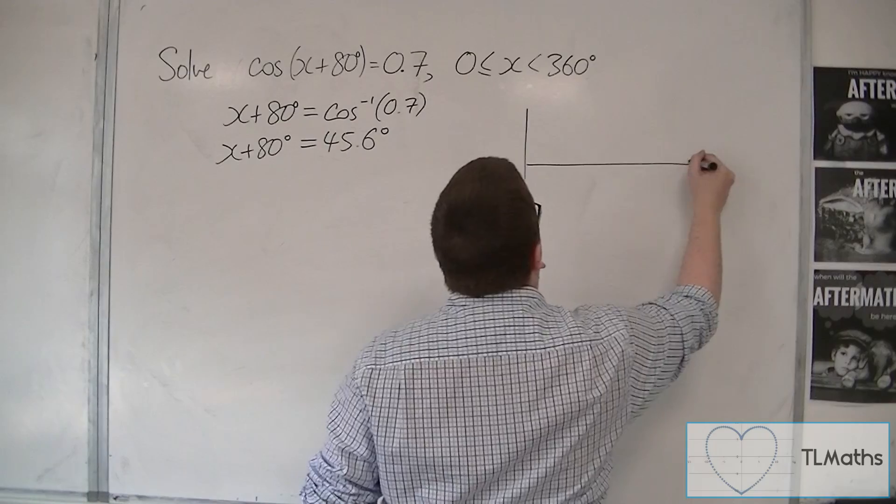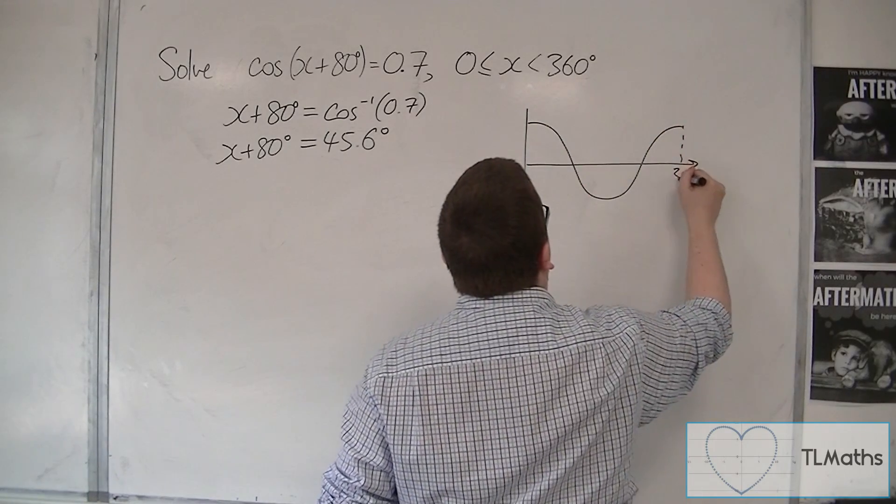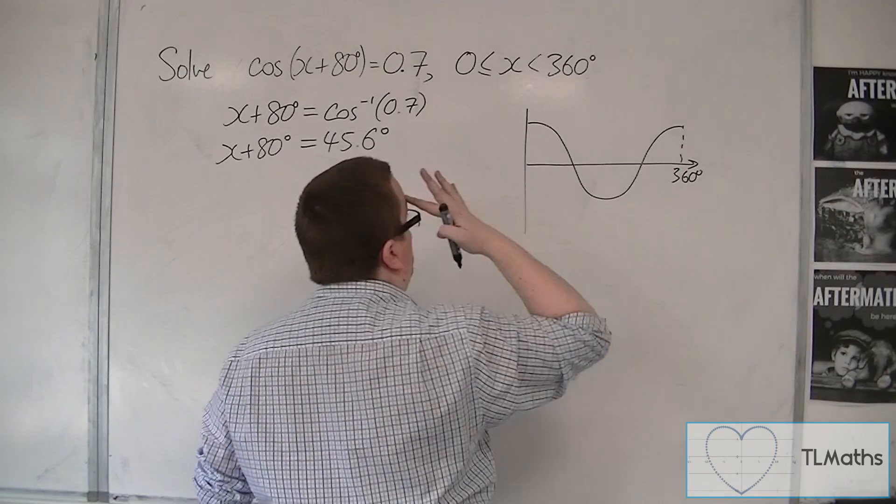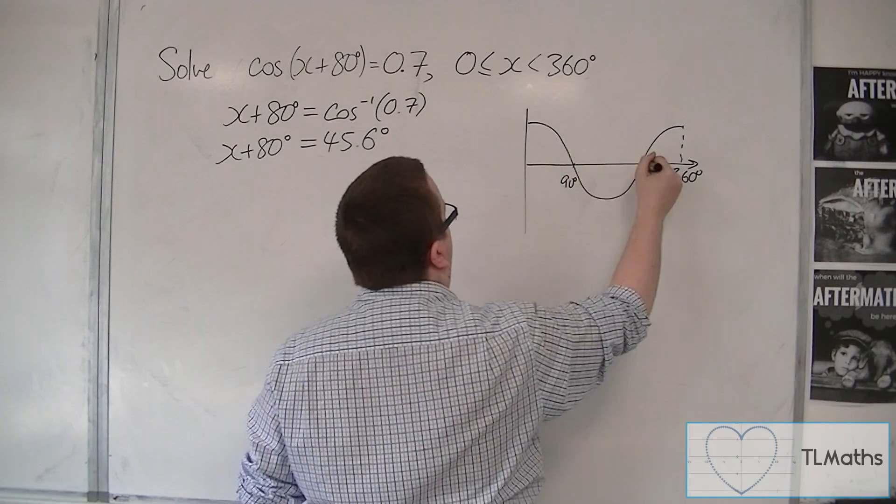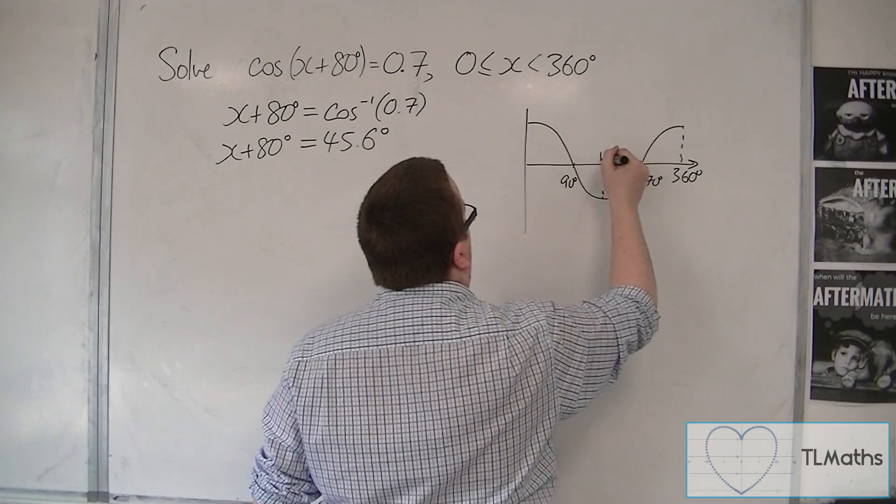We're going to sketch the curve. We're sketching cosine, not the transformed curve. There's 360, there's 90, there's 270, and there's 180.